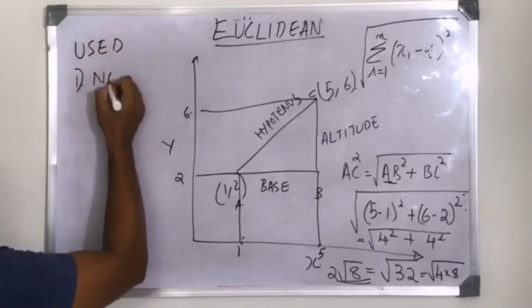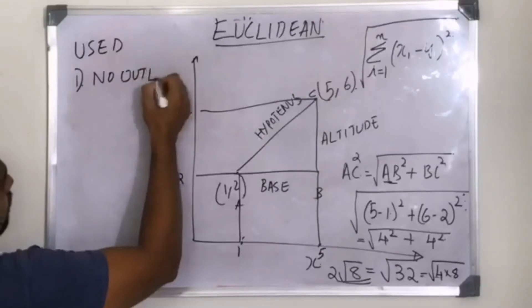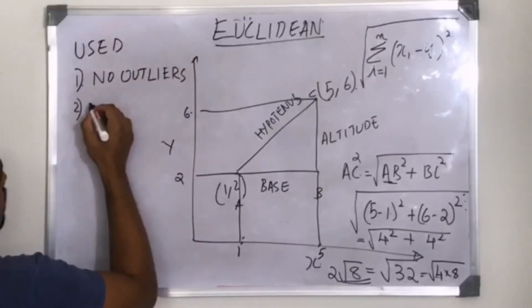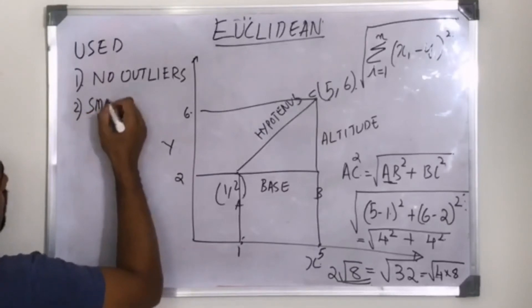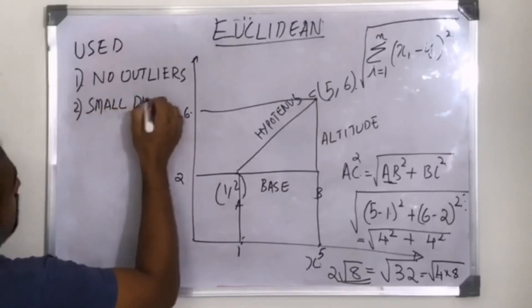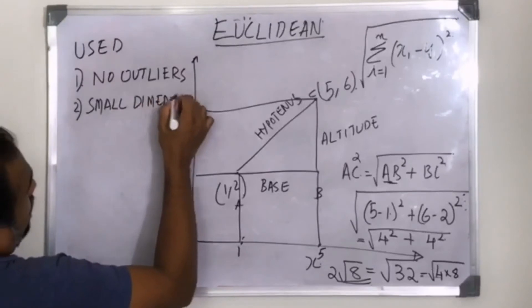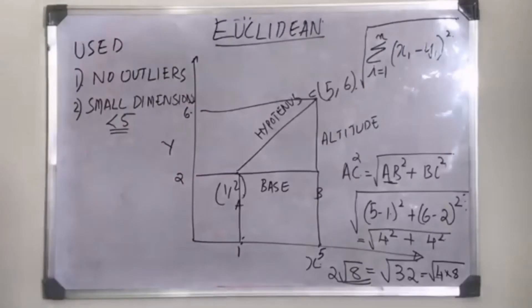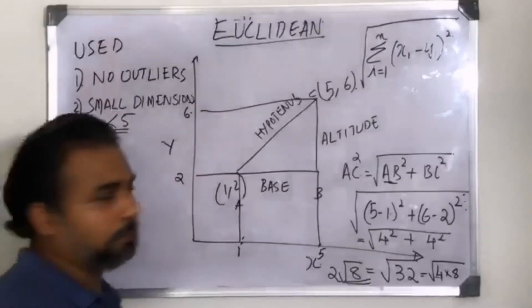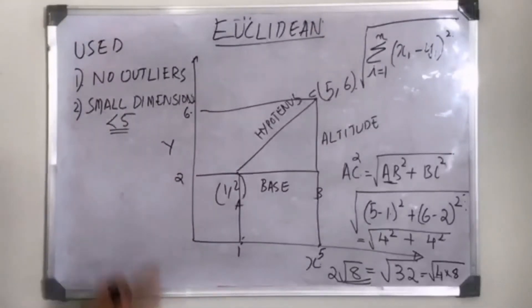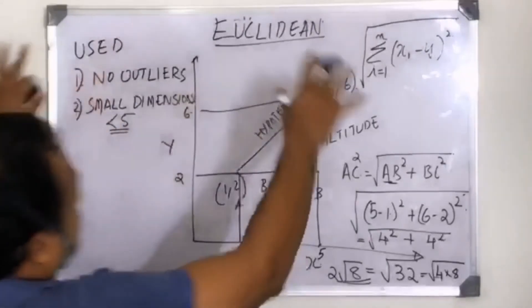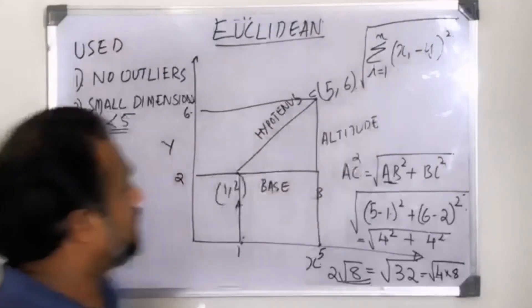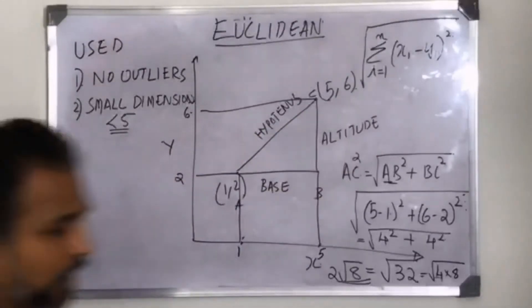To summarize where to use Euclidean distance: use it when there are no outliers and when dimensions are small — preferably fewer than five. This is a rule of thumb, nothing is written in stone, but less than five dimensions is what I generally recommend. In that situation, Euclidean distance is the ideal choice.